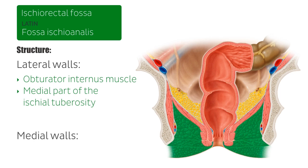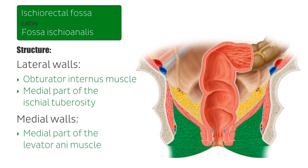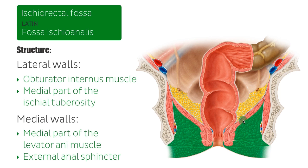The medial walls of this space are bordered by the medial part of the levator ani muscle superiorly, and by the external anal sphincter muscles inferiorly. The levator ani muscle is here, while the external anal sphincter muscle is just here. And just for your interest, over here is our internal anal sphincter muscle.